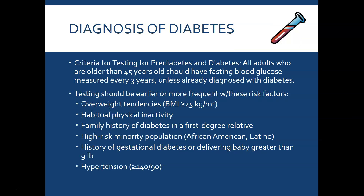For diagnosing pre-diabetes or diabetes, all adults older than 45 should have a fasting blood glucose measured at least every three years. Testing should be earlier or more frequent if a person has risk factors: a BMI greater than 25, habitual physical inactivity, a first-degree relative with diabetes, high-risk minority populations such as African-American or Latino, a history of gestational diabetes or delivering a baby greater than nine pounds, or hypertension defined as blood pressure greater than 140/90.